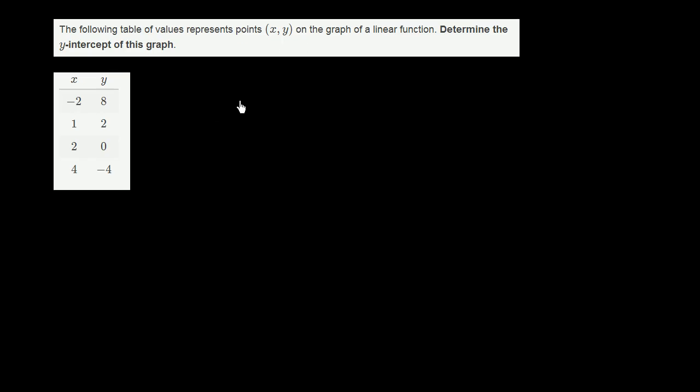So just as a reminder of what the y-intercept even is, if you imagine a linear function or a line, if we're graphing it, let's say that is our line right over there. This is our y-axis, this is our x-axis. The y-intercept is where we intersect the y-axis. Now, what do we know about the y-intercept?